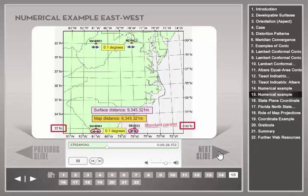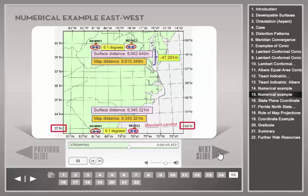For the northern points, the computed surface distance in east-west direction is about 8,663 meters, while the measured map distance is about 8,615 meters — 47 meters shorter. This gives, also for the east-west direction, a map accuracy of about one part in 183, or 0.5%, which matches the map accuracy found for north-south directions. This match can be expected, since with a conformal map projection, scale distortions are the same in each direction at a given map point.